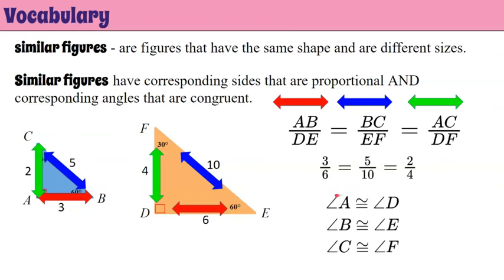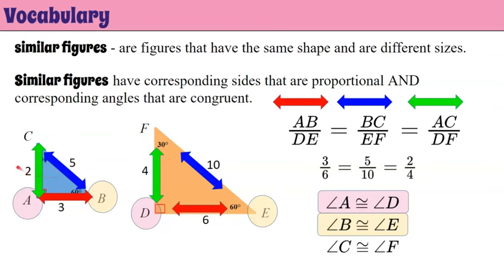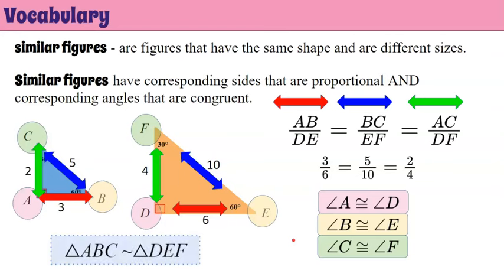Now let's look at our corresponding angles. Angle A corresponds to angle D, and they are both right angles and congruent. This symbol means congruent when we don't know the number. Angle B and angle E are corresponding and congruent — they are both 60 degrees. Our third pair is angle C and angle F — they are congruent because they are both 30 degrees. Corresponding sides are proportional with equivalent ratios, and corresponding angles are congruent — those together make a similar figure. The symbol for similarity is one squiggly line, while congruent uses an equal sign with a squiggly on top.